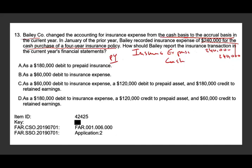How should Bailey report the insurance transaction in the current year financial statements? They moved from cash basis to accrual. If we have a policy of 240,000 serving four years, every year we need to expense 60,000. So for the current year, we need insurance expense of 60,000.